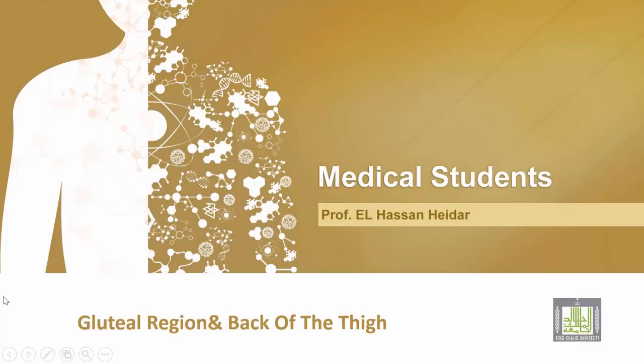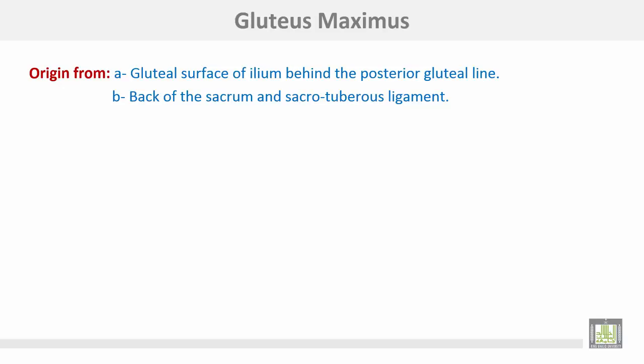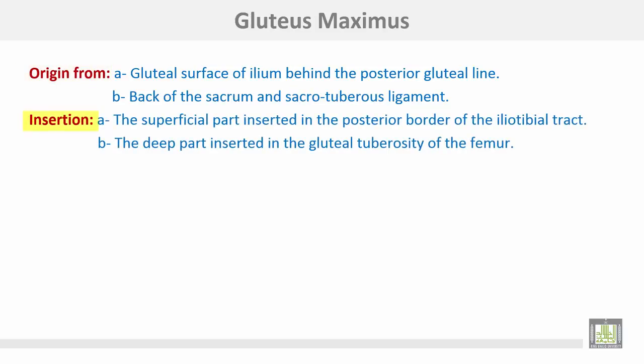Gluteal region and the back of the thigh. The gluteus maximus muscle takes origin from the gluteal surface behind the posterior gluteal line, back of the sacrum, and the sacrotuberous ligament. The superficial part of the gluteus maximus is inserted into the posterior border of the iliotibial tract, while the deep part is inserted into the gluteal tuberosity of the femur. Nerve supply is from the inferior gluteal nerve.